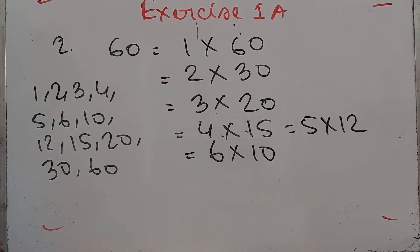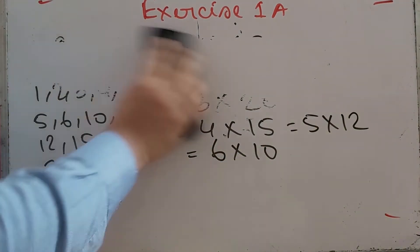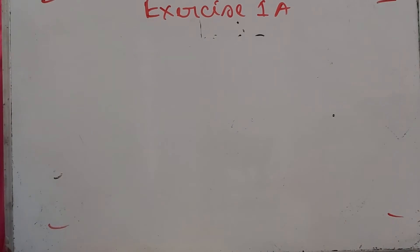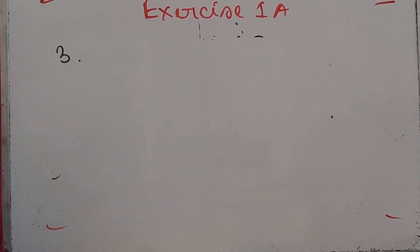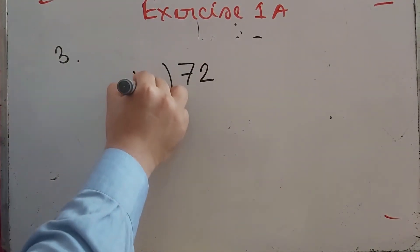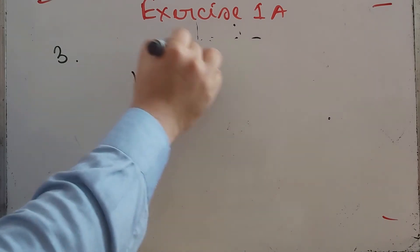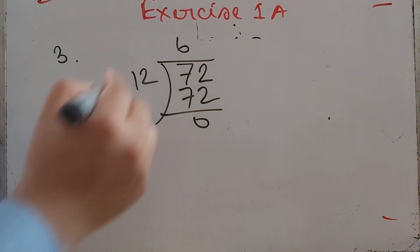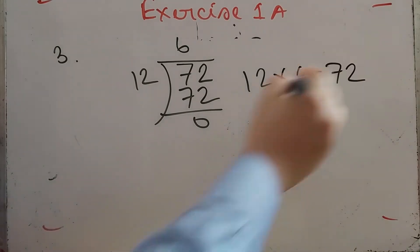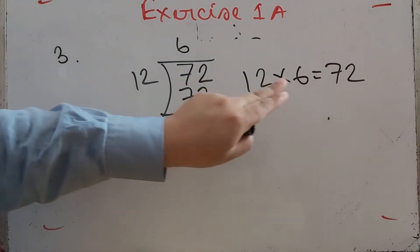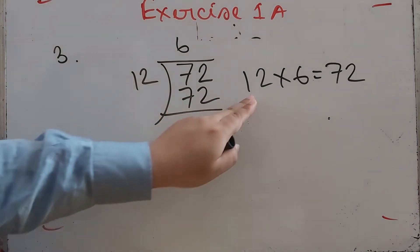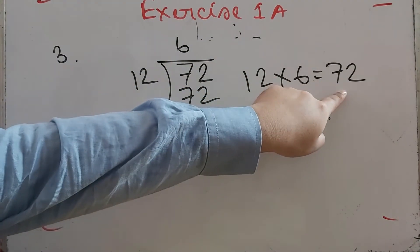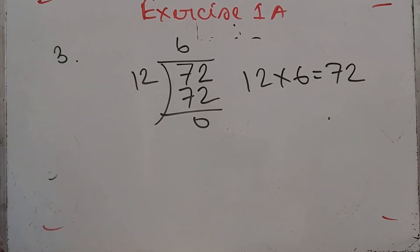Number 3: Is 72 a multiple of 12? To check, we divide 72 by 12. Since 12 times 6 equals 72, yes, 72 is a multiple of 12. Also, 72 is a multiple of 6, and both 12 and 6 are factors of 72.